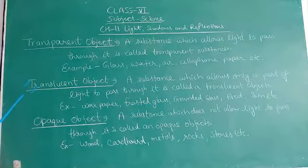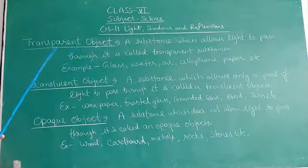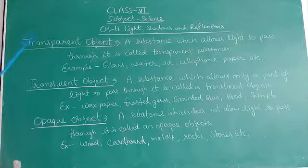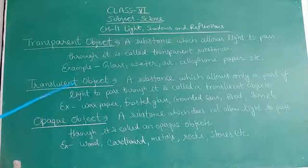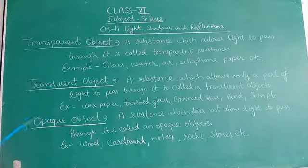So translucent objects are those objects which can allow only a part of light to pass through it, or through which we can see the object not clearly. These objects are known as translucent objects.